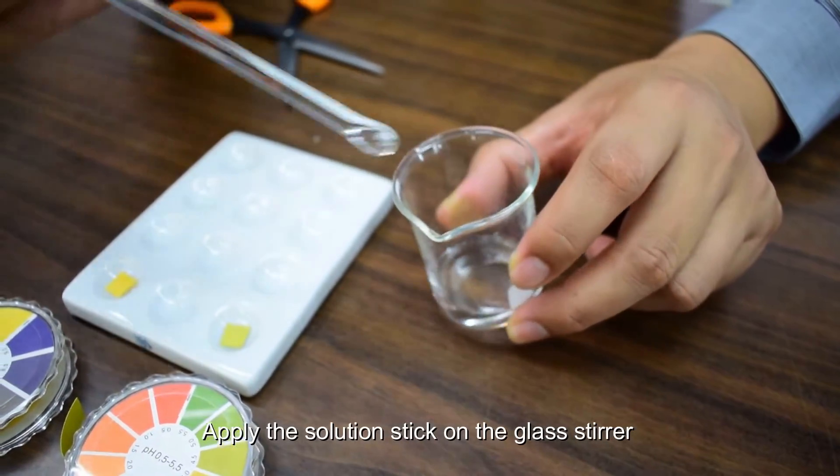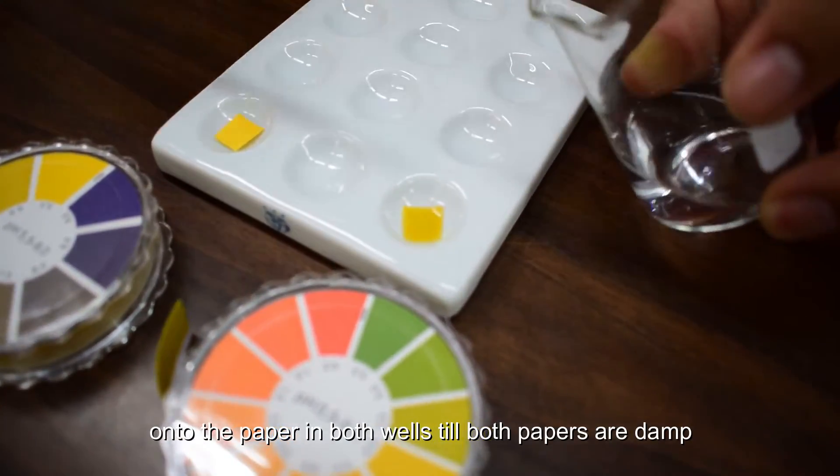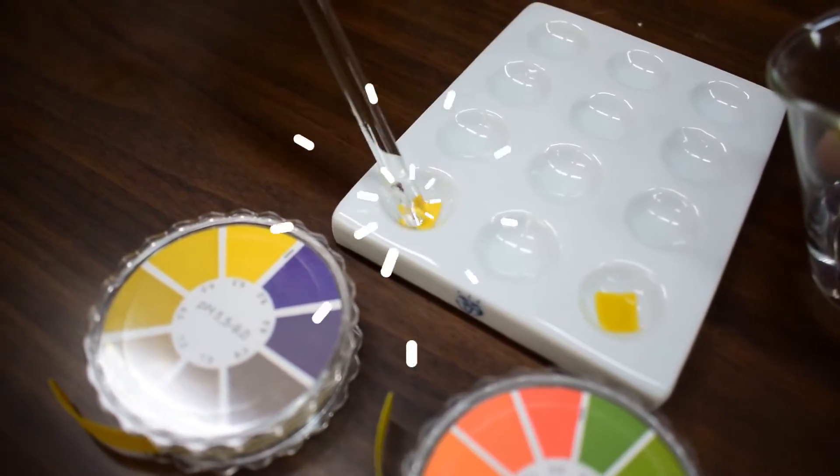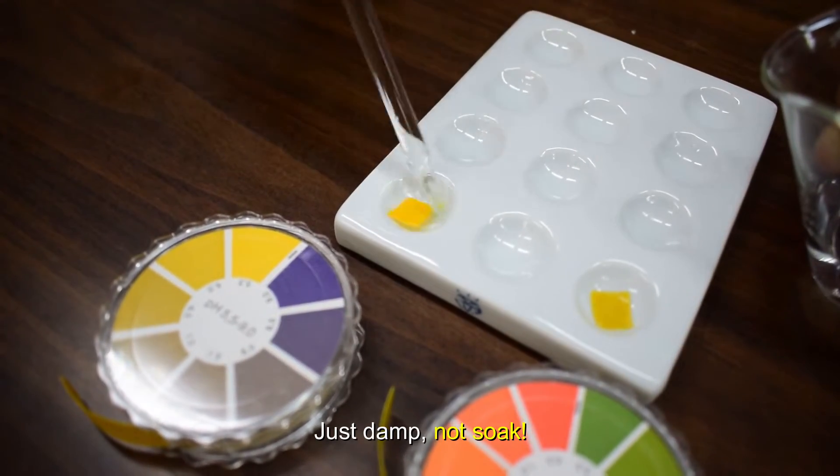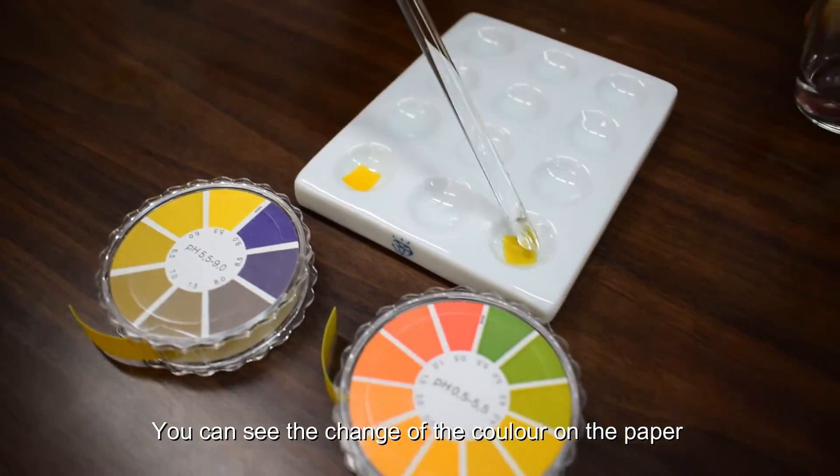Apply the solution stuck on the glass stirrer onto the paper in both wells till both papers are damp. Just damp, not soak. You can see the change of color on the paper.